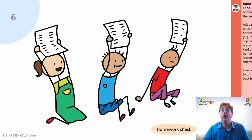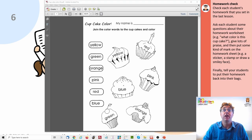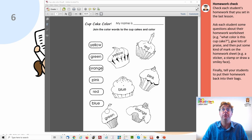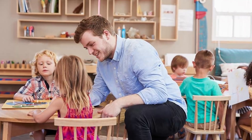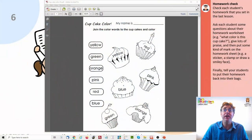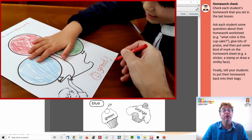Now it's the homework check. Let's bring up the homework from last class — cupcake colour. Quick note on the spelling: it's American English. All of our materials, lesson plans and resources are in American English, or British English, so you can choose which version you need. Have each student show you their homework, go through each sheet with the students, and ask them questions: what colour is this? Yellow. Very good. Then put a mark on the sheet to show they've done a good job and give lots of praise.